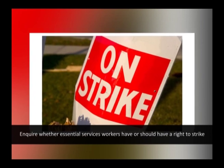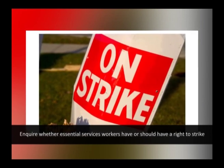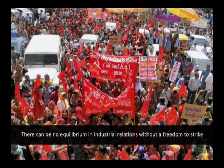Essential services and the right to strike: The starting point is to inquire whether essential services workers have or should have a right to strike. The right to strike for the purposes of collective bargaining is one of the fundamental rights enshrined in Section 27 of the South African Constitution. It is an extremely valuable right because if workers could not in the last resort collectively refuse to work, they could not bargain collectively. The power of management to shut down the plant would not be matched by a corresponding power on the side of labor. These are the ultimate sanctions without which the bargaining power of both sides would lack credibility. There can be no equilibrium in industrial relations without a freedom to strike.